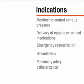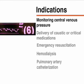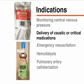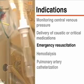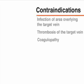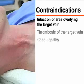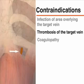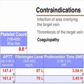The placement of a central venous line is indicated for the continuous monitoring of central venous pressure, the delivery of critical or caustic medications, for emergency resuscitation, hemodialysis, and pulmonary artery catheterization. General contraindications include infection of the area overlying the target vein and thrombosis of the target vein. Site-specific and relative contraindications include coagulopathy. Although this is not an absolute contraindication, extreme care must be exercised in patients with coagulopathy and in other patients for whom complications would be life-threatening.